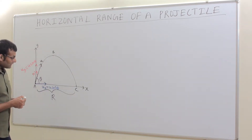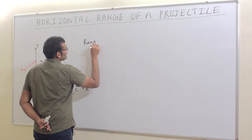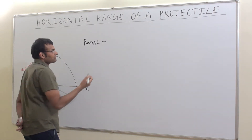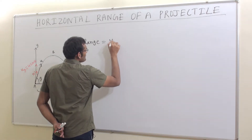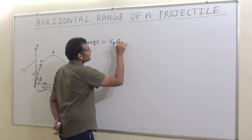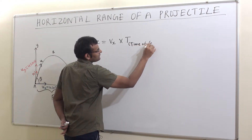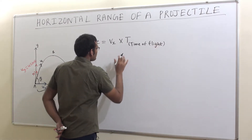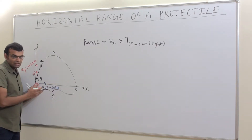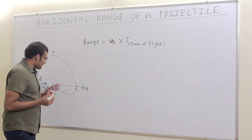How do you calculate the range? Range is the displacement, and we know displacement equals velocity times time. So range equals vx — the horizontal velocity — times time of flight. vx is u cosθ, the initial horizontal velocity, so range equals ux times time of flight.